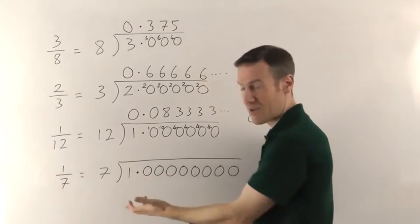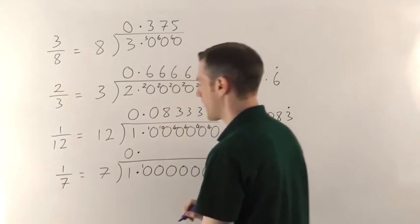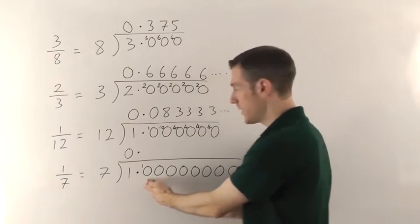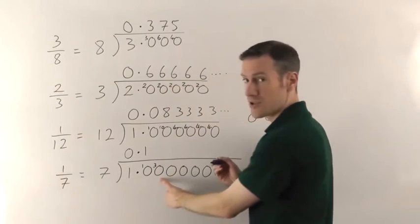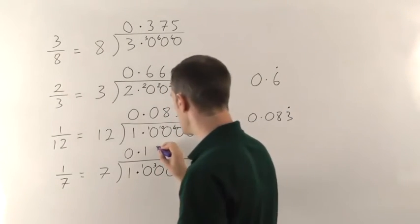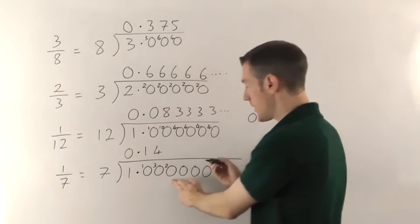Right. 7s into 1 go nothing. Remember the decimal point. Remainder 1. 7s into 10 go 1. Remainder 3. 7s into 30 will go 4 times. 4 7s are 28. Remainder 2.